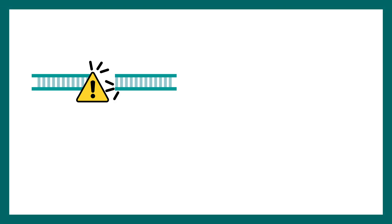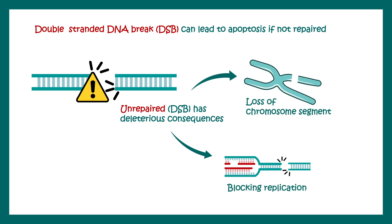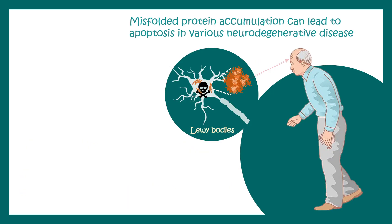In pathological circumstances, one trigger is DNA damage. DNA breaks are detrimental, and if a double-stranded DNA break cannot be repaired, apoptosis may be evoked. Unrepaired DNA breaks can stall the replication fork and lead to loss of chromosome segments. In this extreme scenario, when the defect cannot be reversed, the cell chooses to die in a regulated fashion via apoptosis, thereby saving surrounding cells.